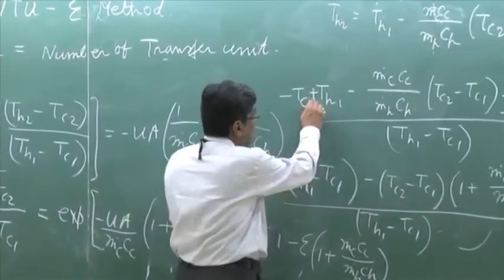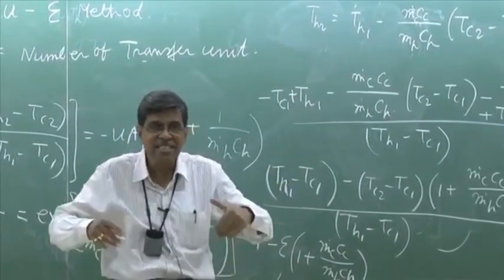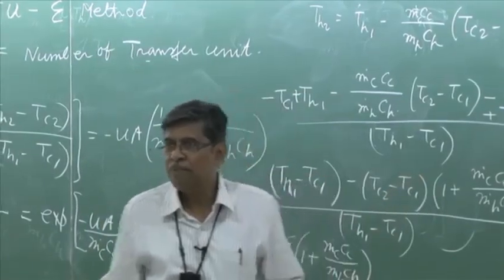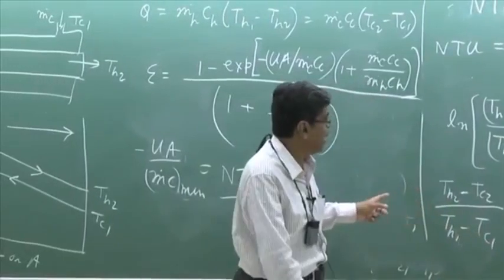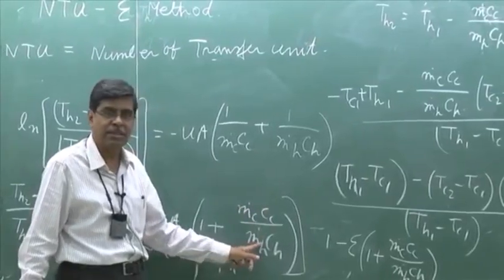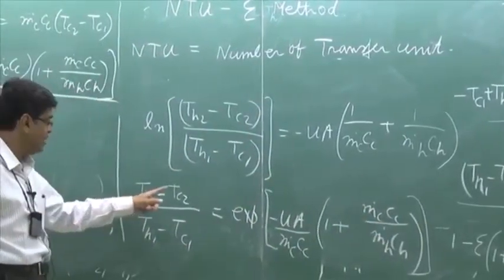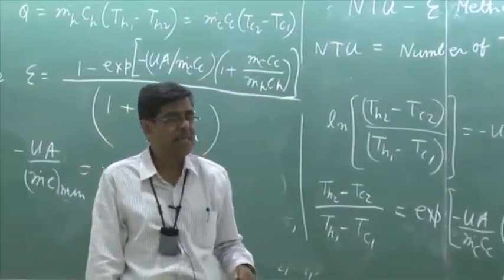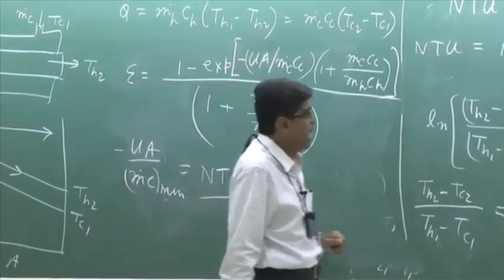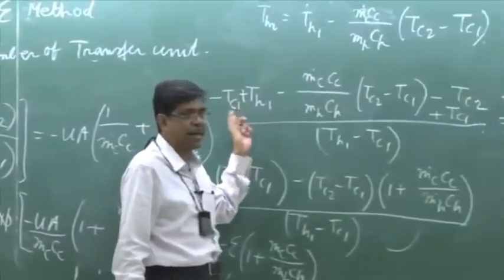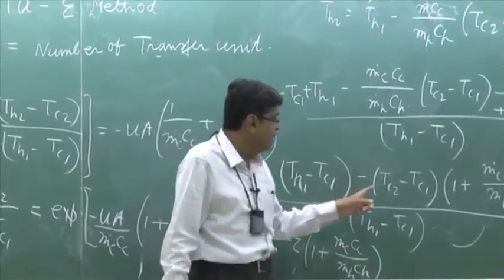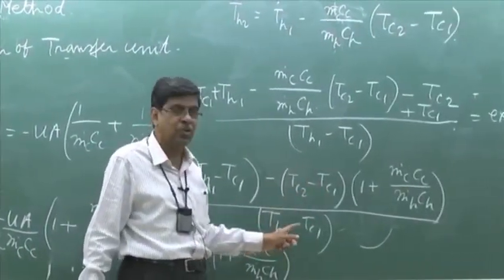And in that case, T c1 will not be added or subtracted — T h1 will be added and subtracted. This is having a rhythm. We will take M dot h c h as common. Then it will be 1 plus M dot h c h by M dot c c. T h2 will remain as it is; T c2 will be replaced in terms of other temperatures — T h2, T h1, and T c1. After that, I will add and subtract T h1, and use the definition of epsilon as T h1 minus T h2 divided by T h1 minus T c1.